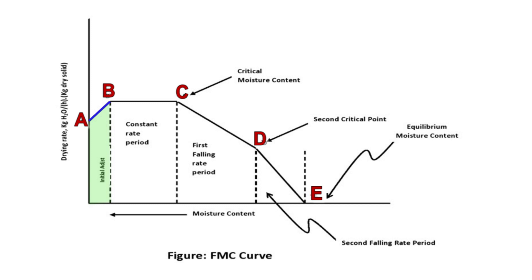The second section, B–C, is called the constant rate period. The temperature remains constant. The moisture evaporating from the surface is replaced by water diffusing from the interior of the solid. The rate of evaporation is equal to the rate of diffusion. The moisture content at the end of the constant rate period at point C is referred to as the critical moisture content or CMC.